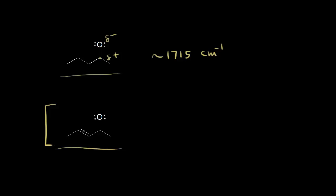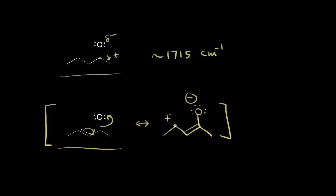We can think about resonance here. If I move these electrons in and push those electrons off onto the oxygen, I can draw a resonance structure. We would now have a double bond here, a single bond of carbon to oxygen, and three lone pairs of electrons around the oxygen. The formal charges would be negative one for the oxygen and positive one for this carbon. The electrons in magenta move over, then the electrons in blue move off onto the oxygen. Remember, the actual structure of the molecule is a hybrid of the resonance structures — the left looks like a carbon-oxygen double bond, the right looks like a carbon-oxygen single bond.